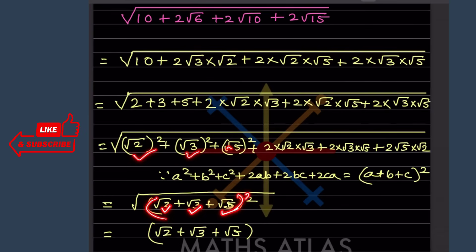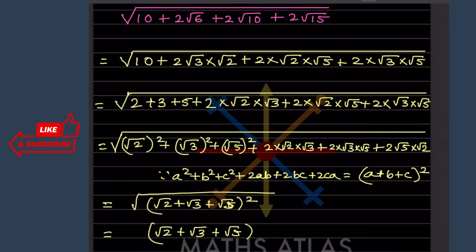We take the square of that one. Since there is a root sign and we square it, we just get √2 + √3 + √5. So a is √2, b is √3, and c is √5 — this is the final answer.